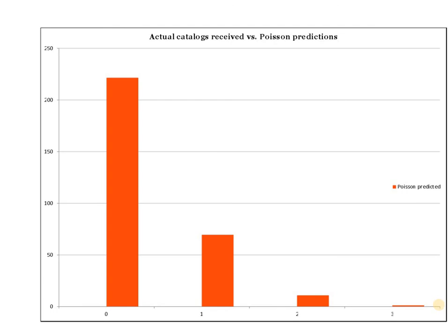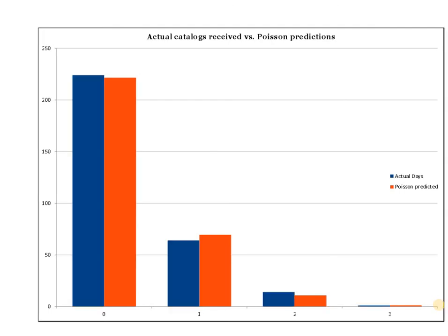Now let me show you what actually happened — the orange is predicted, blue is what actually happened. It's not perfect, and it shouldn't be — this is just a prediction. But pretty darn accurate, really. There were 224 instead of 222 days where we got 0 catalogs, slightly lower on 1, slightly higher on 2. I have to tell you I was nervous about 3 — I knew the Poisson predicted we'd get 3 catalogs once during the year, and it was getting to be November and it hadn't happened yet. But have faith in Christmas, my friends, because Christmas shopping season ramped up and I went out to the mailbox one day and sure enough there were 3 catalogs. I was dancing around like no grown man should dance around for getting Victoria's Secret catalogs, but I was happy that it matched the prediction.